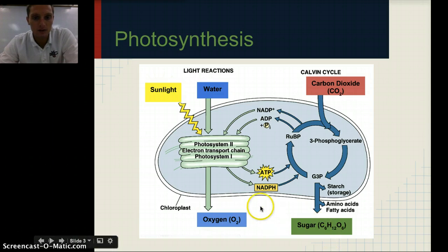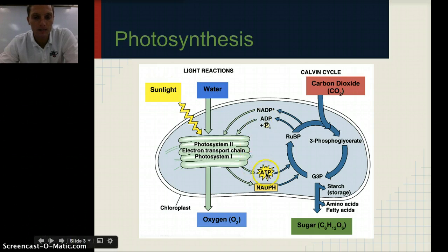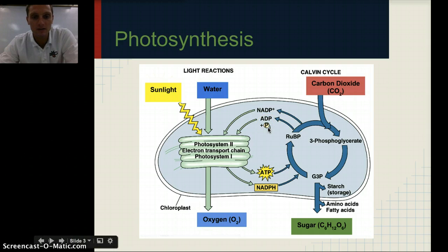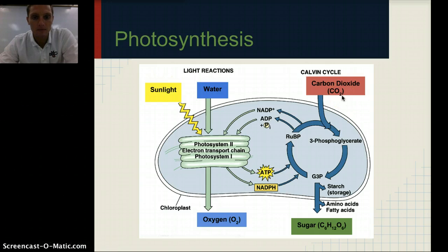A lot of this is recycled, as you can see here. NADPH is a molecule used during this process — it eventually gets recycled; the hydrogen comes off, giving us NADP, which gets recycled through the process. ADP is a form of ATP that's missing one phosphate and gets recycled and reused. ATP stands for adenosine triphosphate, and ADP is adenosine diphosphate — meaning two phosphates versus three. The oxygen and carbon dioxide are also recycled in respiration.